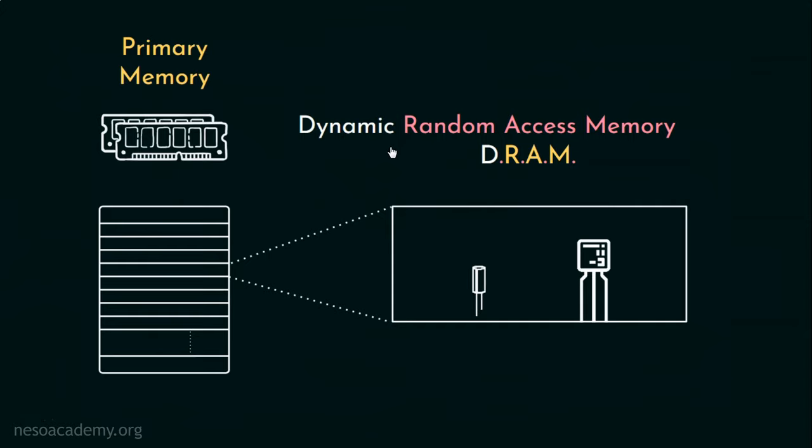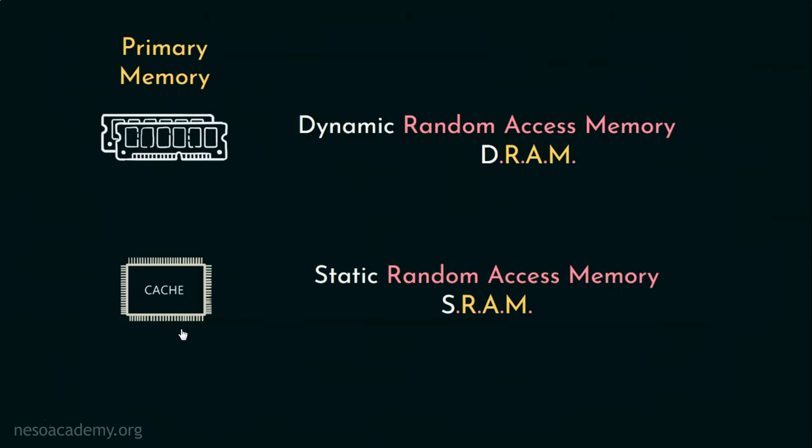But it's still slow for the modern day processors. So we opt for another fast memory storage, the cache. Now the cache is made up of static RAM which doesn't have any capacitors, but they are very costly in comparison to the main or primary memory. However, cache happens to be the fastest memory storage among all others.